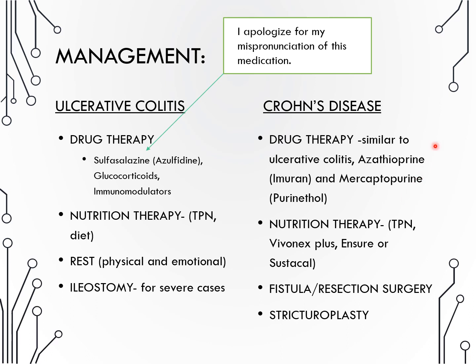Crohn's disease care is much like UC care. The two additional medications for severe Crohn's disease are noted separately. Crohn's patients who are not NPO or on Vivonex need high-calorie, high-protein, high-vitamin, and low-fiber diets. Due to the high risk of malnutrition, watch for weight loss and imbalanced intake and output. Low vitamin B12 is common — patients may have to give themselves B12 injections at home.